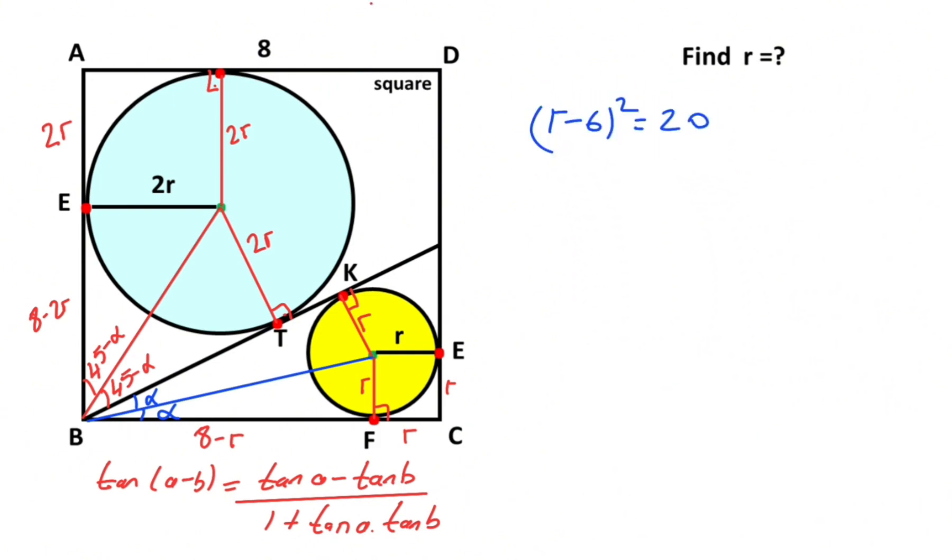Therefore we get two scenarios, right? Let's clear both sides of the equation. First scenario: r minus 6 equals root 20. And second scenario: r minus 6 equals minus root 20.